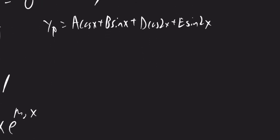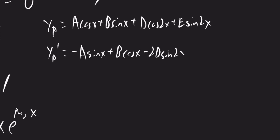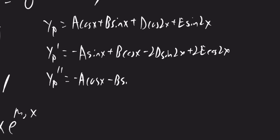Now that we have yp, we can take the derivative to find yp prime. This will be equal to negative a times sine x plus b times cosine x minus 2d times sine 2x plus 2e times cosine 2x. We can take the derivative again to find yp double prime. This will be equal to negative a times cosine x minus b times sine x minus 4d times cosine 2x minus 4e times sine 2x.